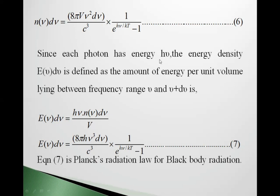Since each photon has energy h nu, the energy density u(nu)d(nu) is defined as amount of energy per unit volume lying between frequency range nu and nu plus d nu. So we get E(nu)d(nu) equals 8 pi h nu cubed d nu upon c cubed times 1 upon e raised to h nu upon kt minus 1, equation 7. This is Planck's radiation law for black body radiation.